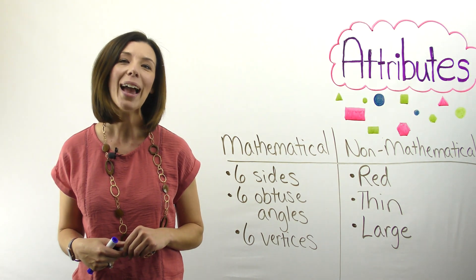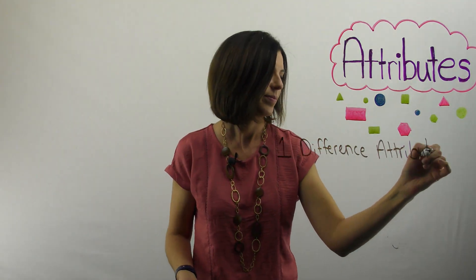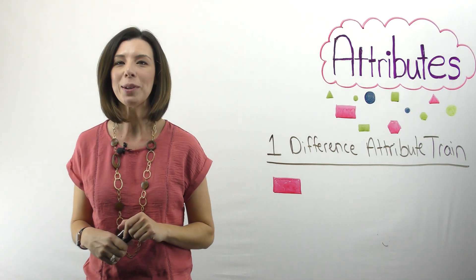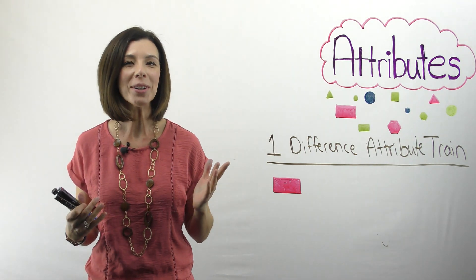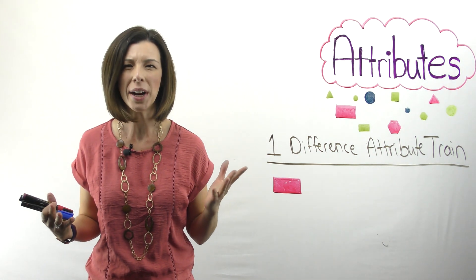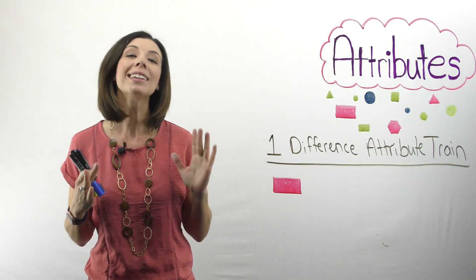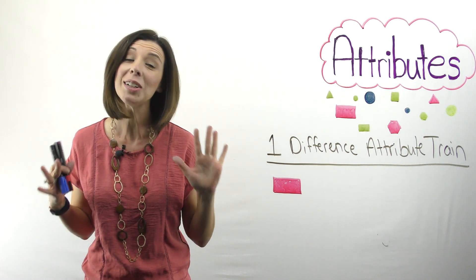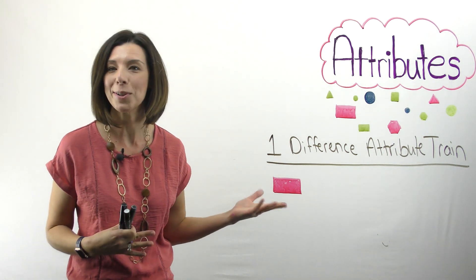One difference attribute trains. Now, if you're wondering, wait a second, where did the trains come from? We like to call them trains because we're going to put them all in a row. Okay, so you didn't miss anything. That's where trains coming from.